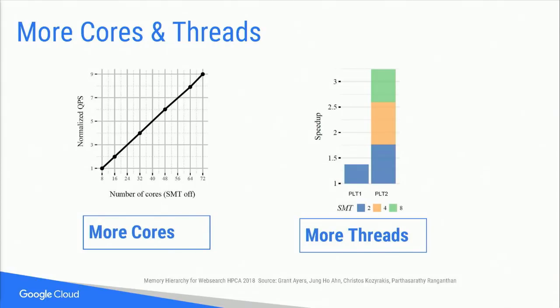We also looked at platforms with different thread counts per core — an Intel platform on the left and an IBM platform on the right. We found that when you right-size the architecture, in particular having an appropriately sized L2 cache, the performance of web search scales really nicely with thread count. For our web search, which consumes a significant amount of compute resources at Google, more threads and more cores is a good thing.